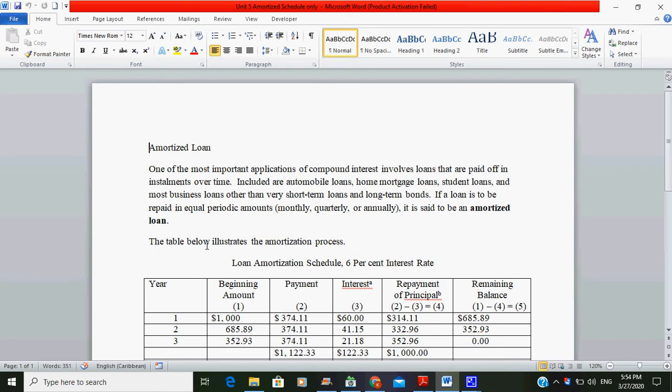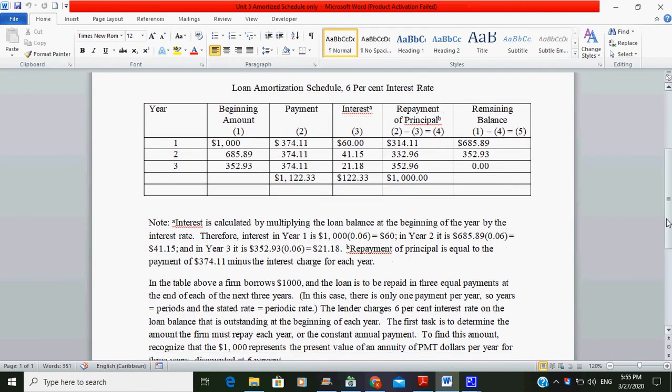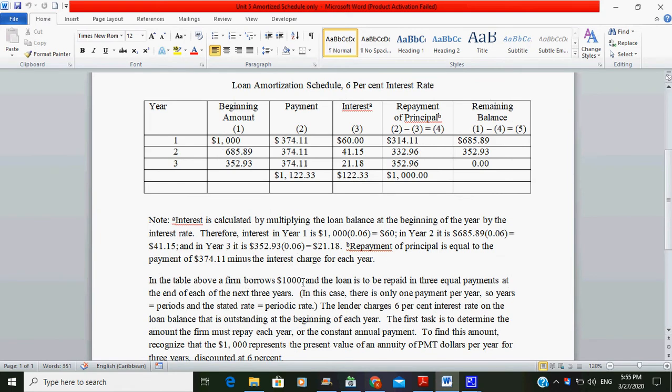The table below illustrates the amortization process. In the table above, a firm borrows $1,000 and the loan is to be repaid in three equal payments at the end of each of the next three years. In this case, there is only one payment per year, so years equal periods and the stated rate equals the periodic rate. The lender charges 6% interest rate.